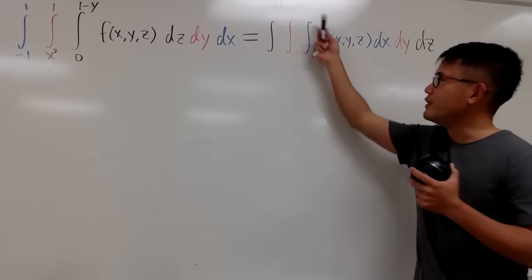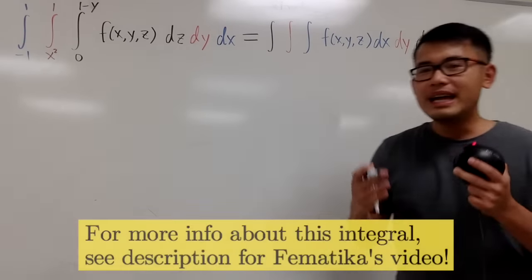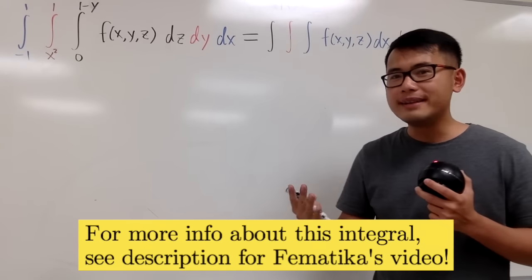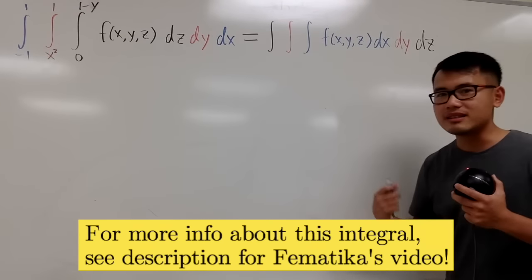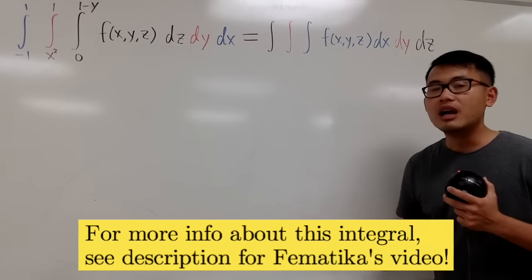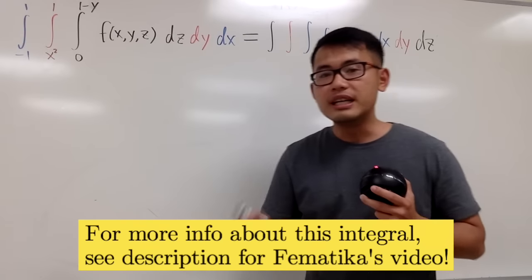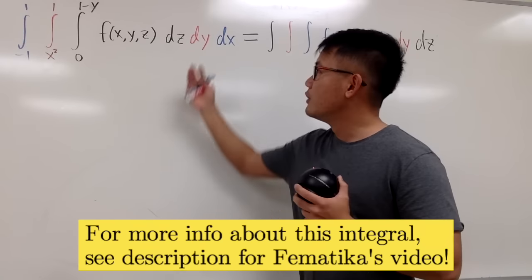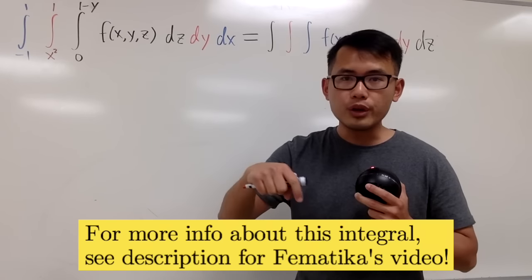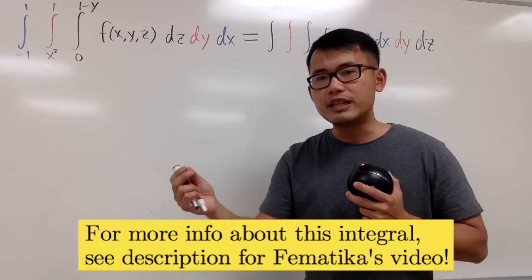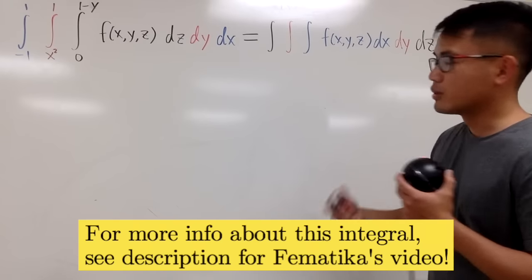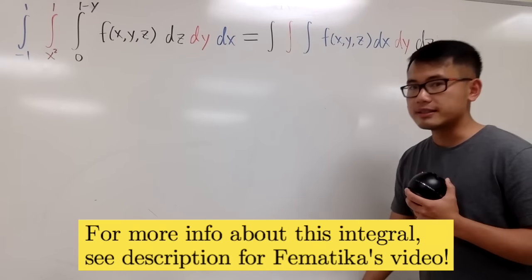We have to figure out this. In fact, we have four other ways to organize the dy, dx, and dz — the differentials. The reason we have a total of six is because for three differentials, we can do three factorial: three times two times one equals six. So there will be a total of six ways to organize that.